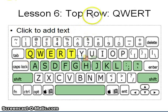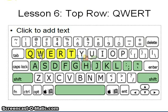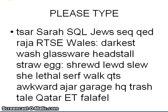Lesson number 6 is now on the top row. We have the QWERTY row. For letter Q, use your left little finger. W, left ring finger. Letter E, left middle finger. Letter R and letter T, left index fingers. The activity for lesson number 6.